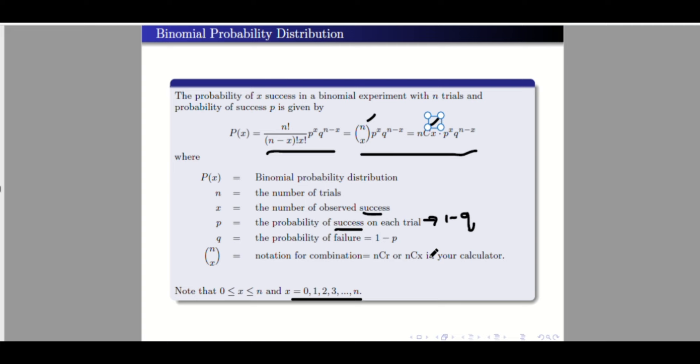Example one: In a survey, 25% of the people interviewed said they bought their refrigerator during the last six months. If 11 people are selected at random, find the probability that exactly six of these people bought their refrigerator during the last six months. Let's label the values: the number of fixed trials, or randomly selected people, is 11, so n equals 11.